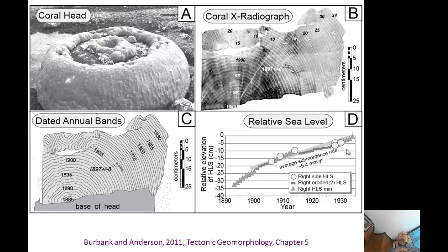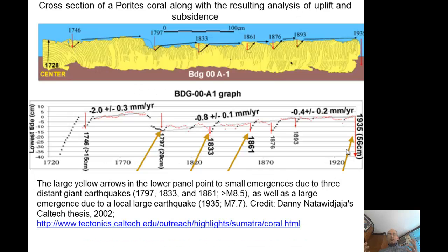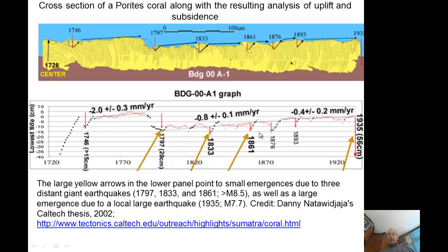Here's a more complex record from Danny's PhD showing a really big coral that began growing in the 1700s. Going upward indicates submergence; a drop indicates an emergence event — meaning uplift. This record shows three large distant earthquakes where the coral subsides between earthquakes then lifts up. In 1927.7 a nearby larger earthquake almost killed the coral by lifting it out of the water.